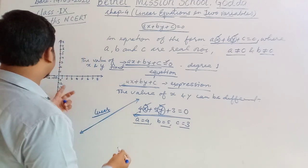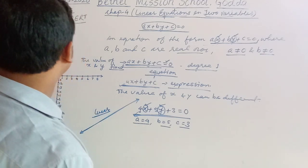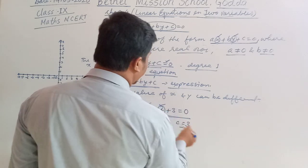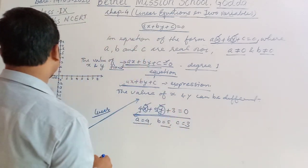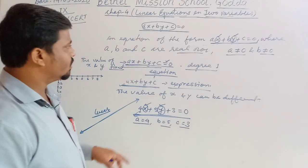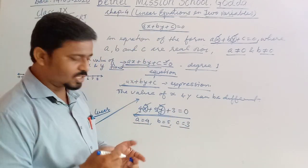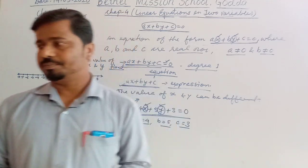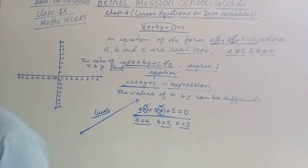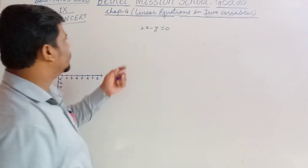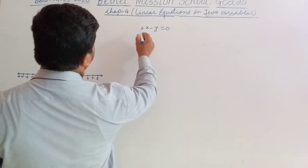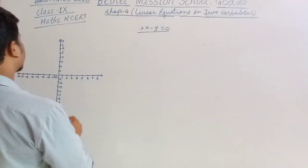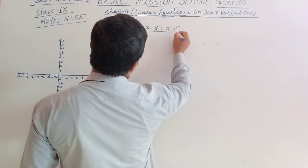So, we will see how you can draw the line of any equation on the graph — on the Cartesian Plane. We will show. We have an equation: 2X minus Y equal to 0, and we will draw the graph of this equation.